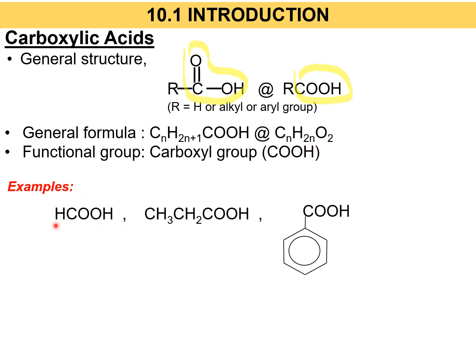For example, we can see here that R can be H or an alkyl or any aryl group. If it's HCOOH, this one is also a carboxylic acid. For this one, the alkyl group is CH3CH2.